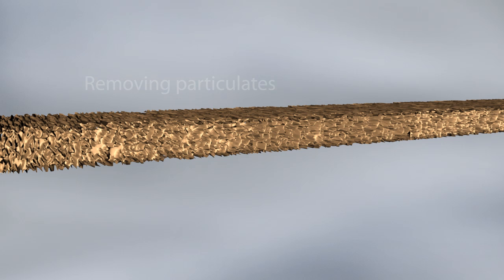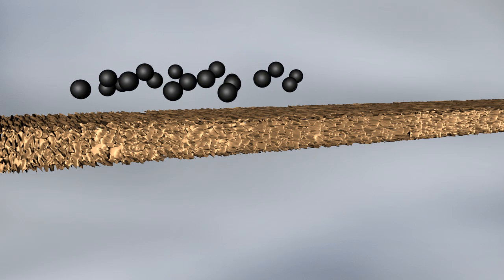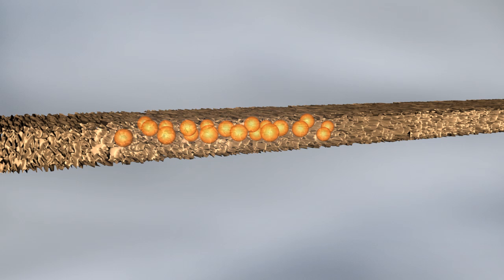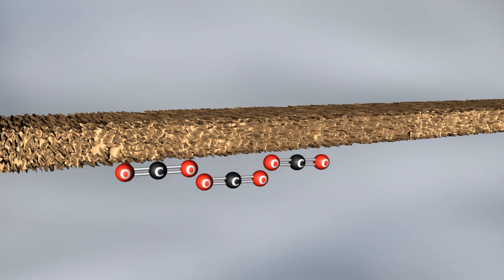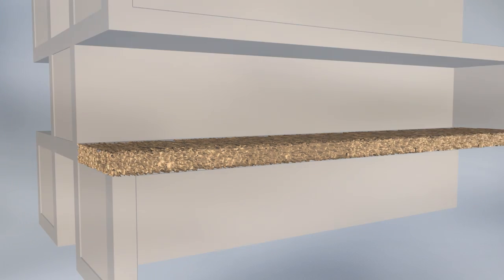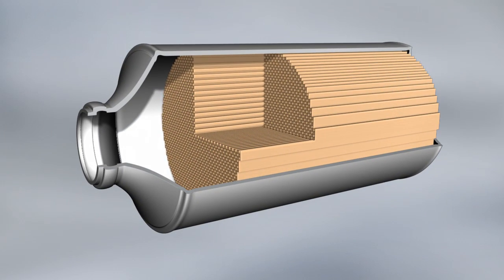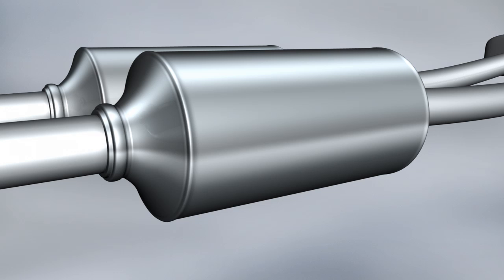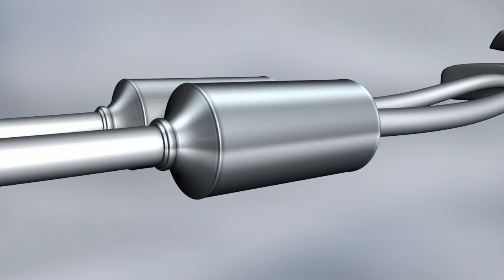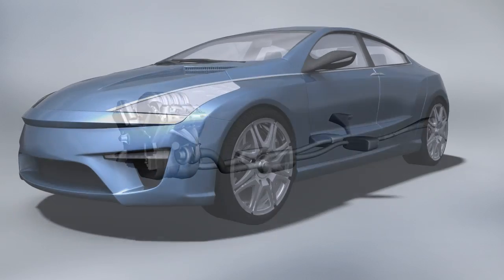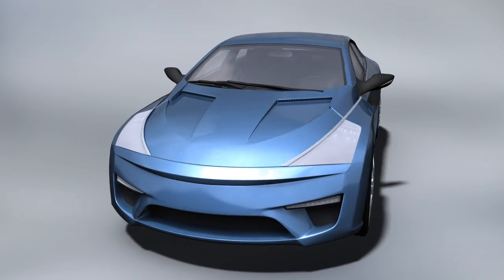The particulates contained in the exhaust gas are retained by the porous ceramic wall. At high temperatures, particulates are then combusted to carbon dioxide. This prevents the four-way conversion catalyst from becoming blocked and enables it to function throughout the entire vehicle's service life of more than 160,000 kilometres.